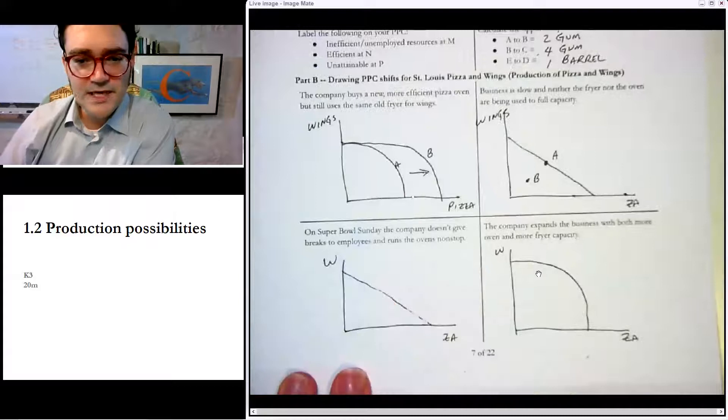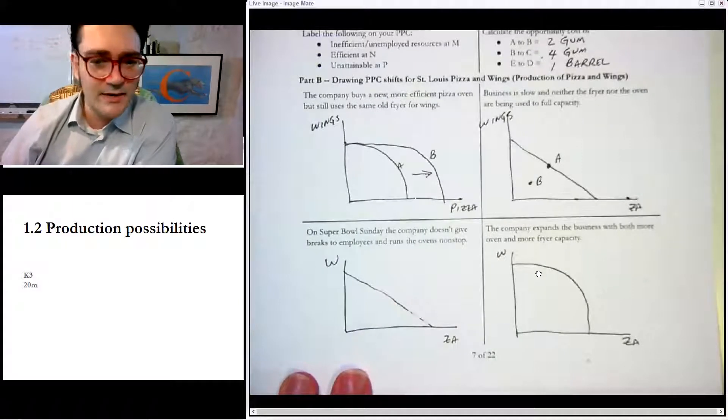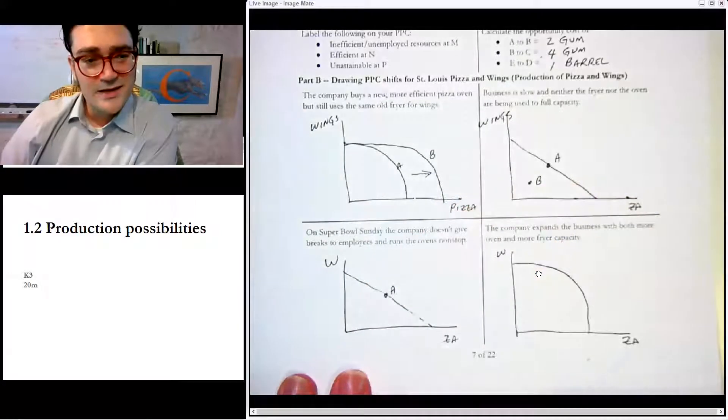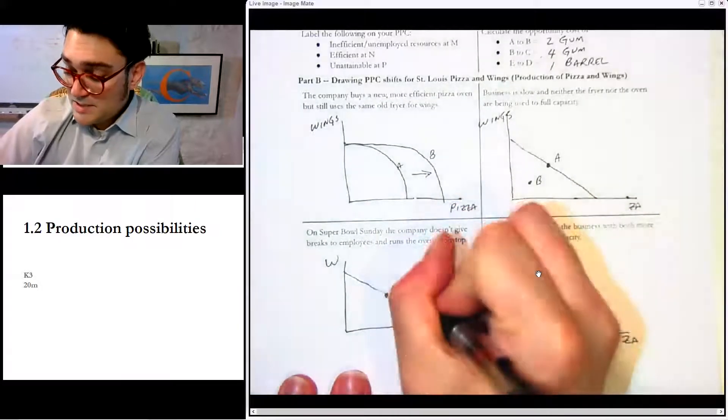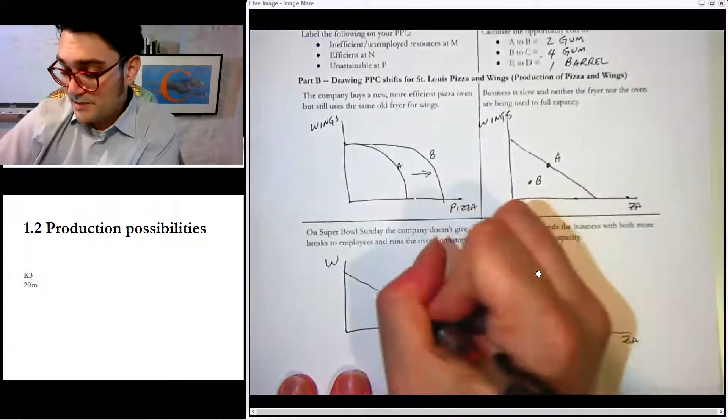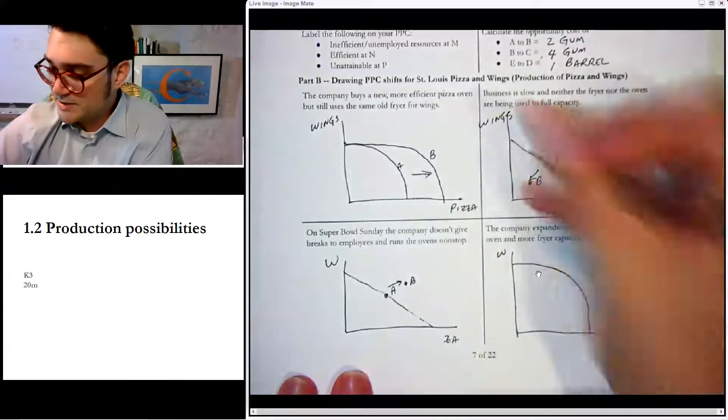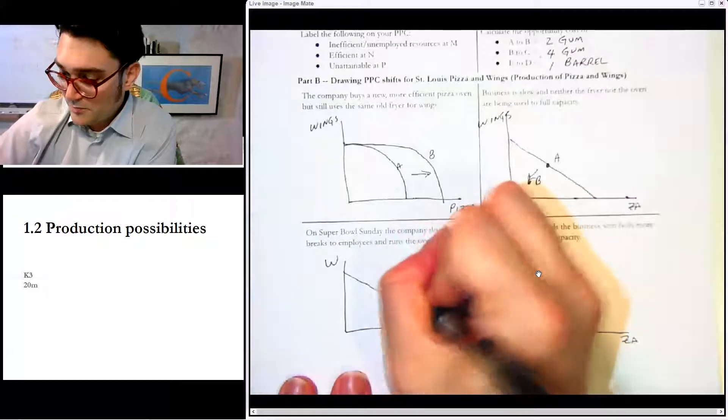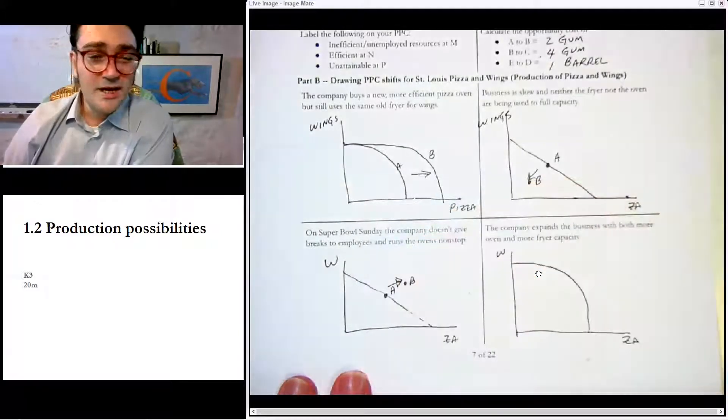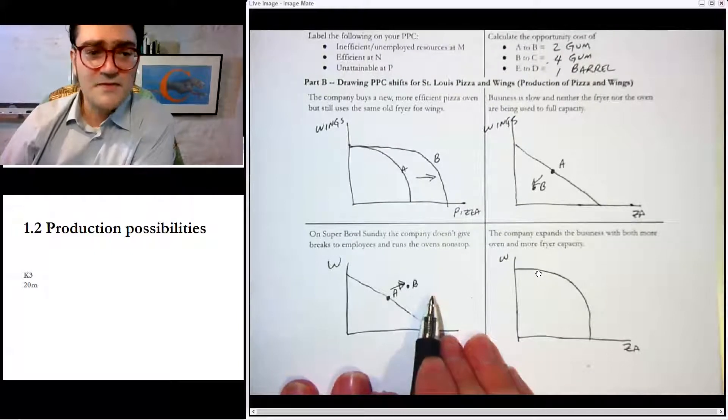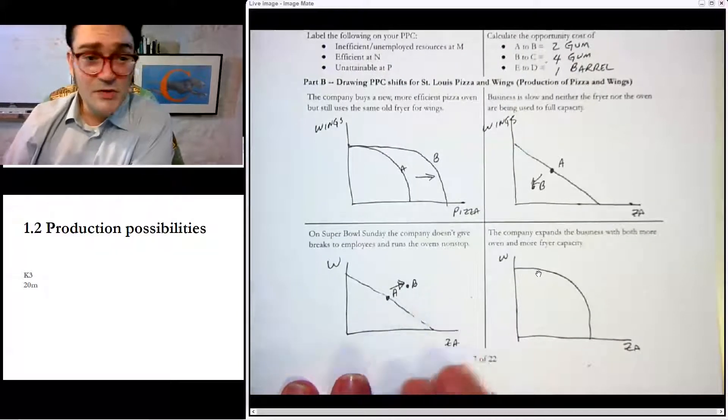Now, on Super Bowl Sunday, the company gives it no breaks and runs the ovens nonstop. So we're going to start at point A, but now we're going to be unsustainable for a little bit at point B. From point A to point B. And I'll put a little arrow there as well so that you can see. So we moved from point A to point B. Now, we're not going to permanently be able to stay out here at point B. It's unsustainable. It's not feasible. But maybe for a day, we can do it.